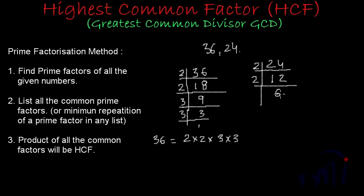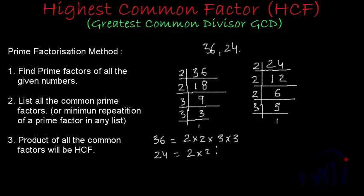Continuing: 2 × 6 = 12, 2 × 3 = 6, and 3 × 1 = 3. So the prime factors of 24 are 2 × 2 × 2 × 3. I have now noted down the prime factors of both numbers.